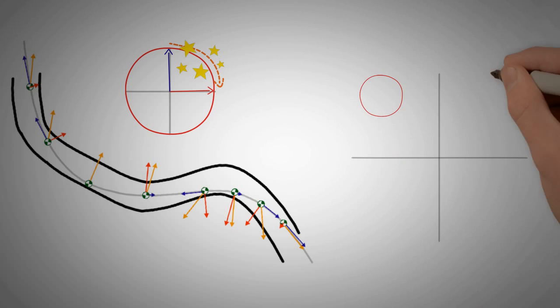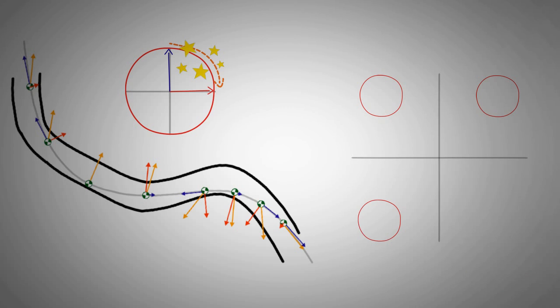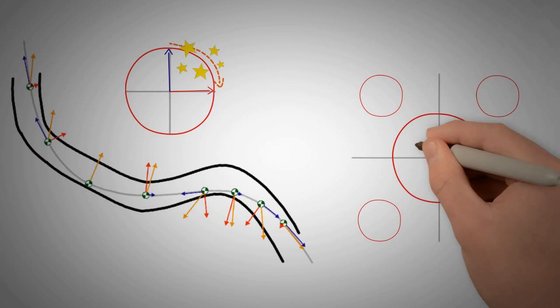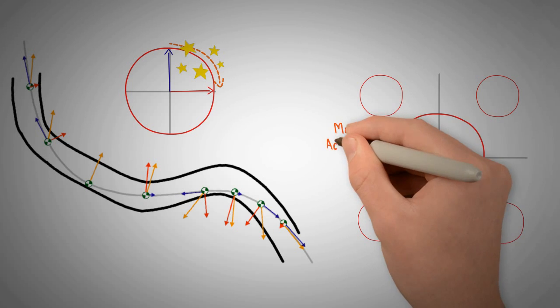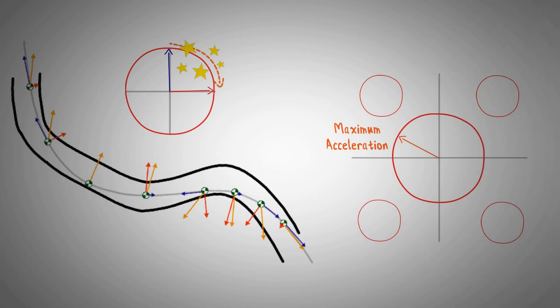If we take into account the friction circle of all four tires, we can draw for every speed the car's GG diagram. GG stands for longitudinal and lateral acceleration, and this diagram shows the accelerations the car can achieve at a given speed.